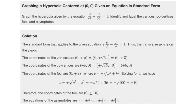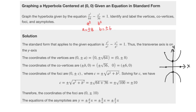Now let's do an example: graph a hyperbola given its standard equation, and identify and label the vertices, co-vertices, foci, and asymptotes. This equation starts with y², so we know the transverse axis is on the y-axis. Here a² = 64 and b² = 36, so taking the square root gives a = 8 and b = 6. The center is at (0, 0) and the vertices have x-coordinate zero, so they are at (0, ±8).